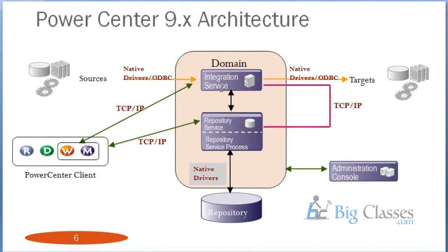The Integration Service moves data from source to target. It fires a SELECT statement to the source database and retrieves the data. Transformations happen in Informatica's internal memory, called cache. Data retrieved from the source is stored in the cache, then transformed according to your defined transformations, and finally loaded into the target database — which is essentially firing an INSERT statement.